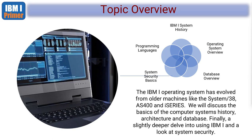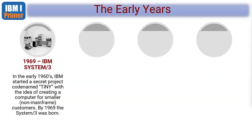So where did these machines start? I've used very loose years because technology takes a long time to develop and be released. Some records say the first System 3 was 1967, some say 69, some say 70. I've looked at all the records and picked a rough date that shows the chronology of how the systems evolved.